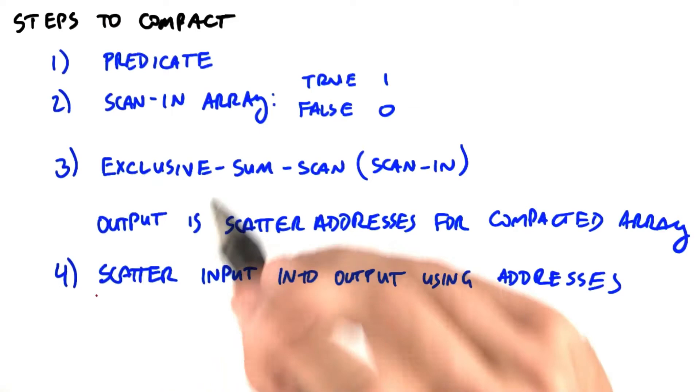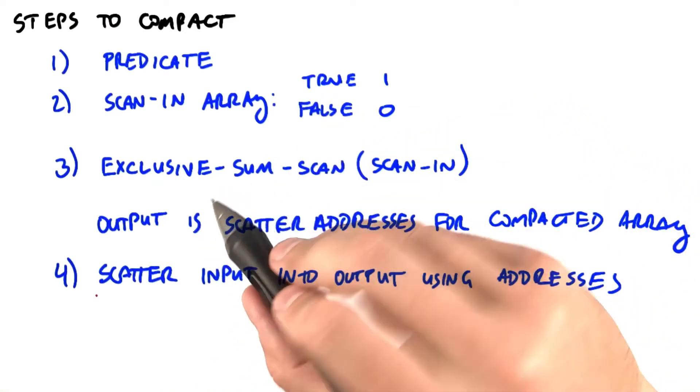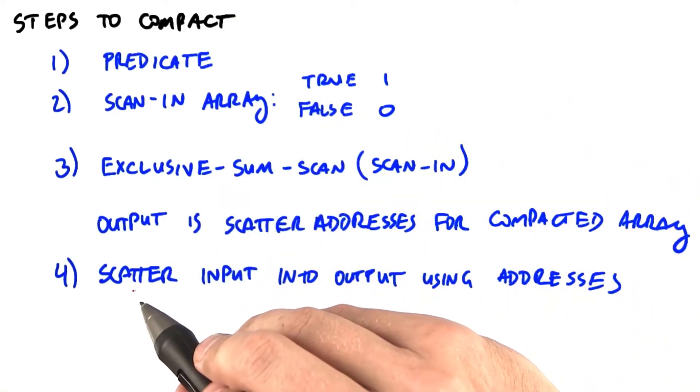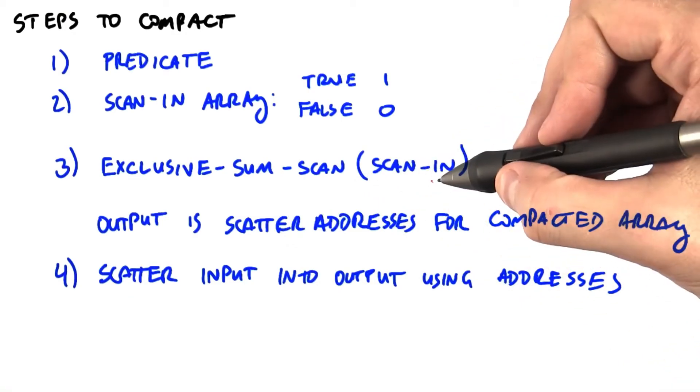for each element of the input, if the predicate is true, then scatter the input element into the output array at the address from scan out.